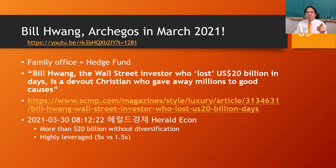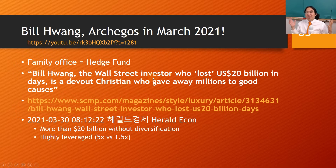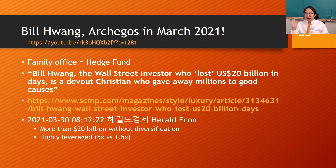The case is Bill Hwang and Archegos. In March 2021, you must remember what happened to Archegos — Google search it. Bill Hwang is a big figure in the Korean-American community. He was a big investor since the Peregrine period around 1997 and made tremendous amounts of money.